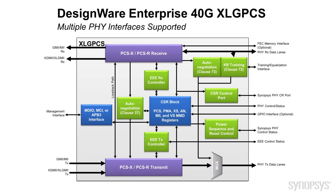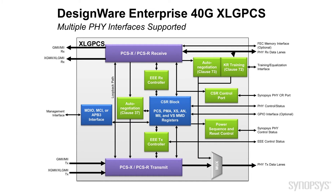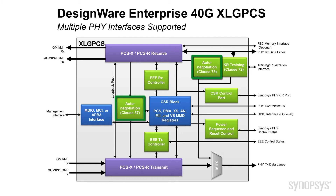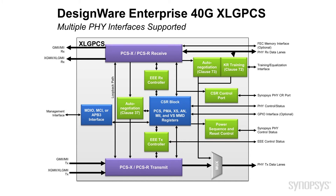As a separate block, we have the DesignWare Enterprise 40GB PCS. This core supports multiple PHY interfaces, including GMII and MIII, as well as XLGMII and XGMII, for the different speeds you may want to connect this controller IP to. It can be configured to support energy-efficient Ethernet, auto-negotiation, and different power savings modes such as wake on LAN — a very flexible core that can be configured for your application.